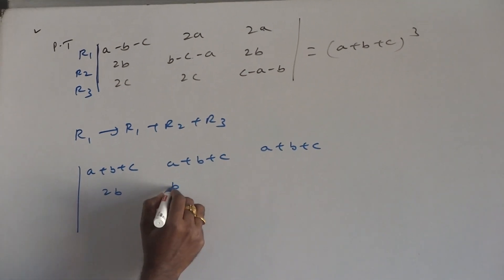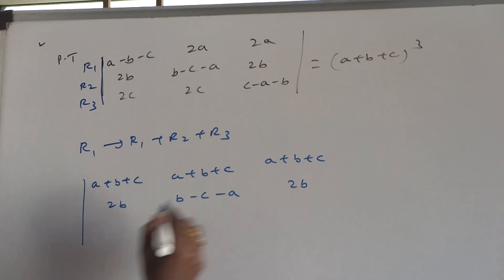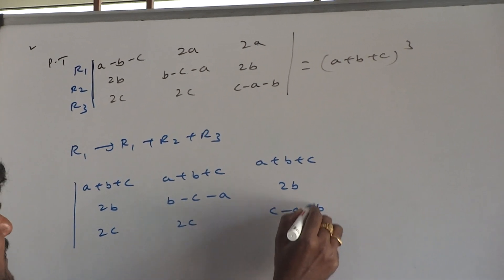No change in row 2 and row 3. B minus C minus A, 2B, 2C, 2C, C minus A minus B.